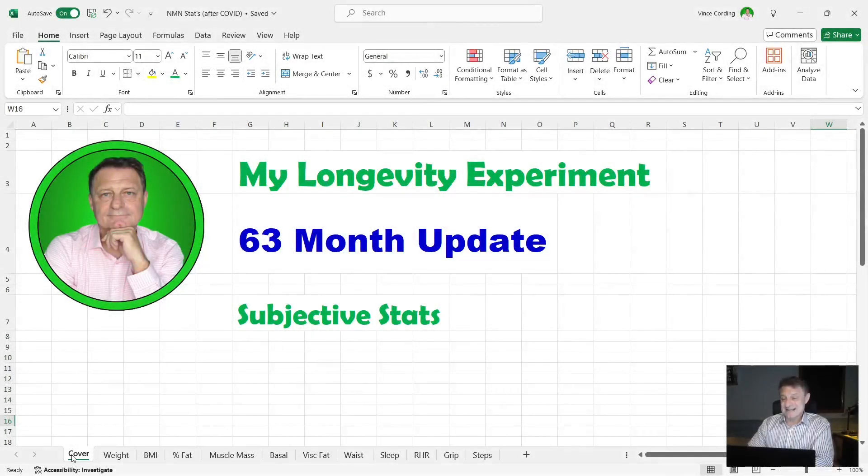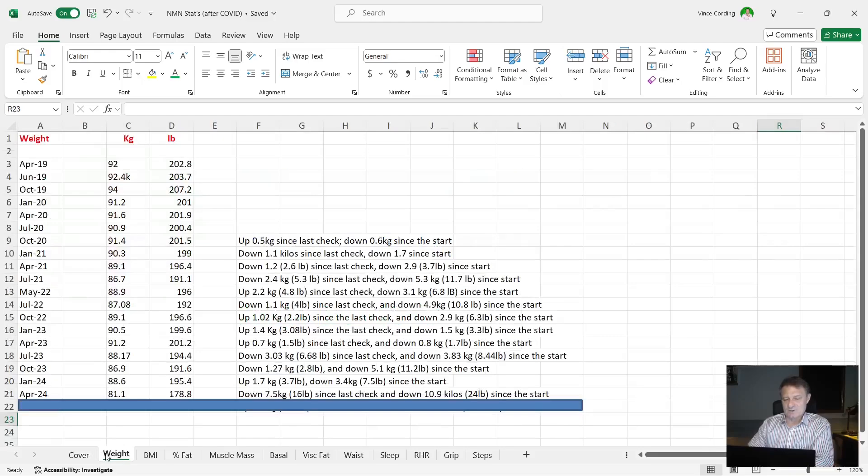So let's look at the objective stats for my longevity experiment, 63 month point. First of all, let's look at my weight. You can see there that the last three months at the end, which was April, I was 81.1 kilos, 178.8 pounds.